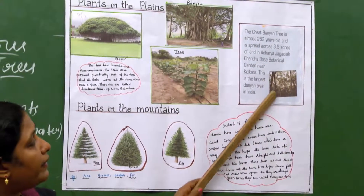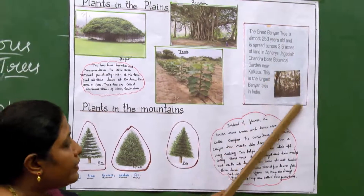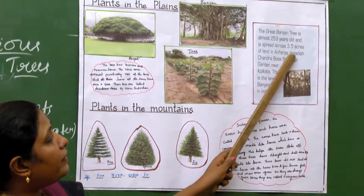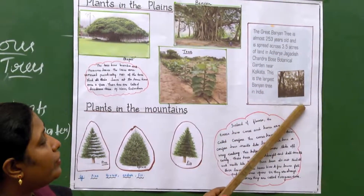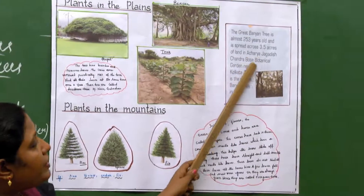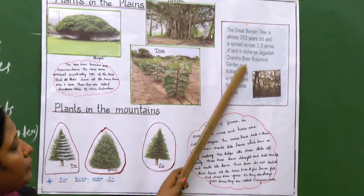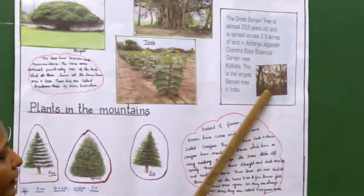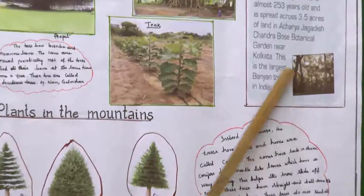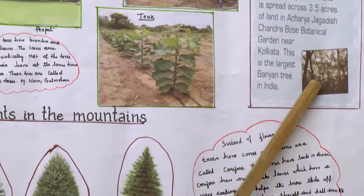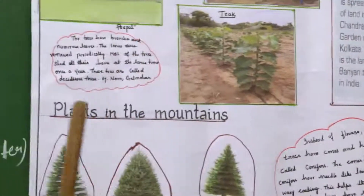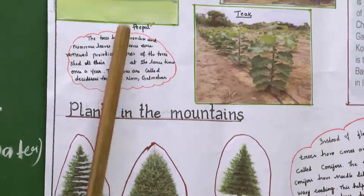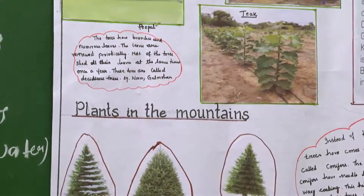The great banyan tree is spread across 3.5 acres of land in Acharya Chandragu's botanical garden near Karnataka. This is the largest banyan tree in India — it's amazing, isn't it? It occupies 3.5 acres in Acharya Chandragu's botanical garden in Karnataka. These are very good examples of plants which grow on land.